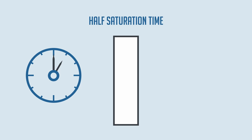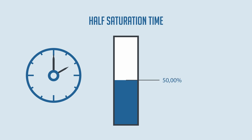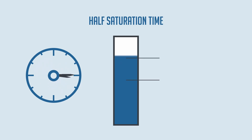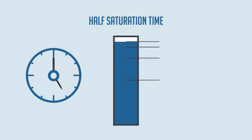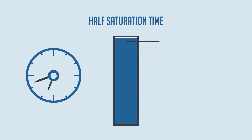The half-saturation time means that the pressure within a tissue increases by half of the prevailing pressure difference after the corresponding time. With a half-saturation time of one hour, we would therefore have 50% after one hour, then 75%, then 87.5%, then 93.75%.